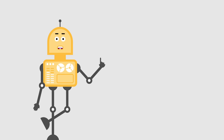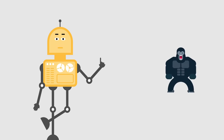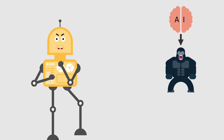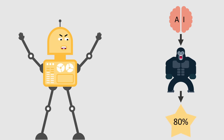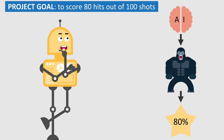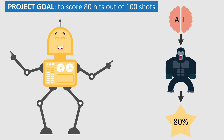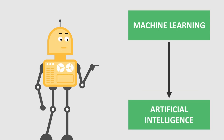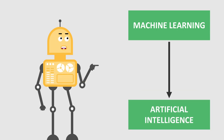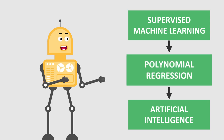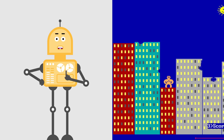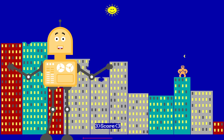Let's move on. The main goal of this project was to create artificial intelligence that can successfully score more than 80% of shots. Any score above 80 hits out of 100 shots should be a great achievement. I used machine learning to implement artificial intelligence. More specifically, I used supervised learning algorithms with polynomial regression. But first, I had to make the original game with complete functionality.